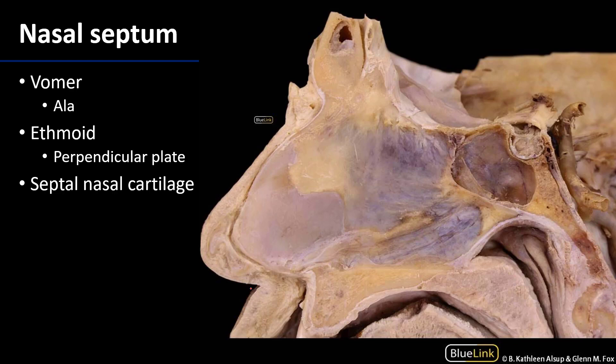Now looking in profile we get a better sense for how these elements come together. Let's outline the vomer here — here it is up against the sphenoid.